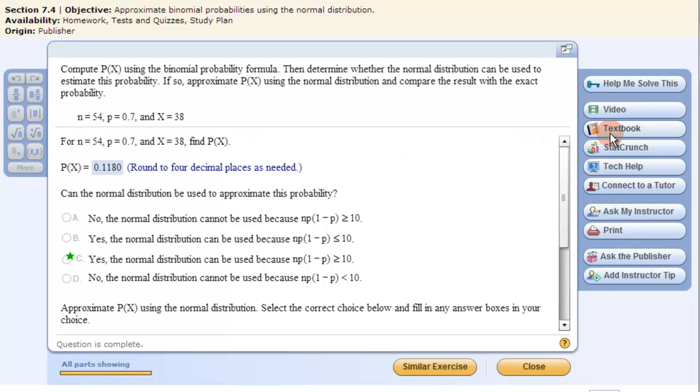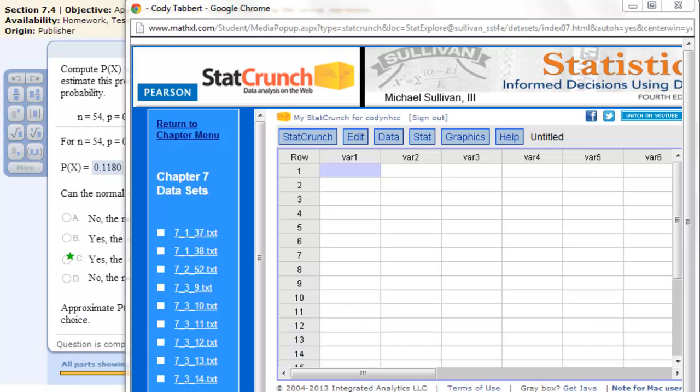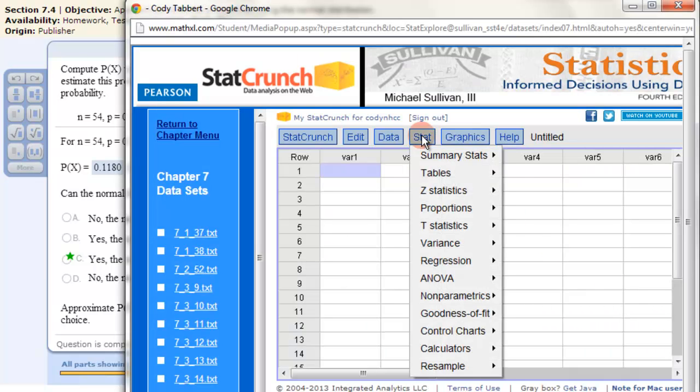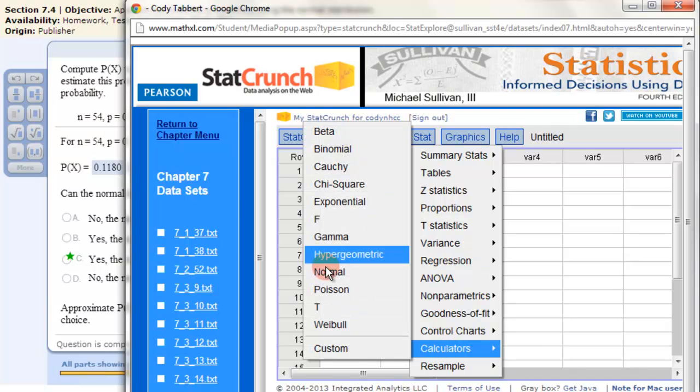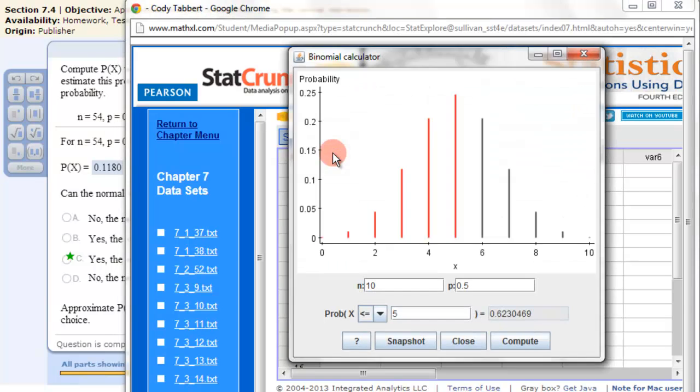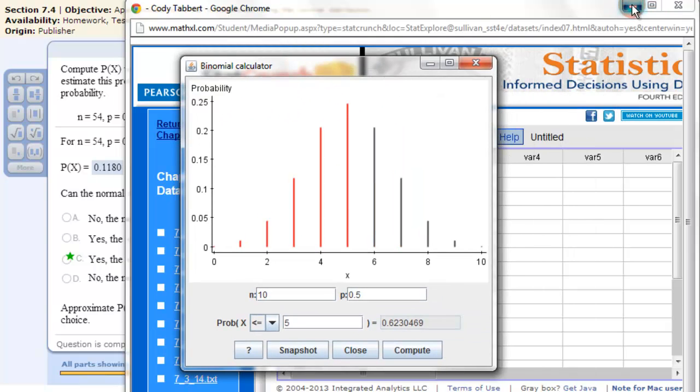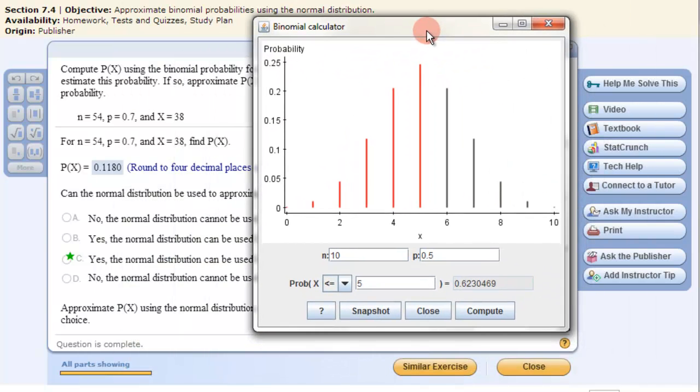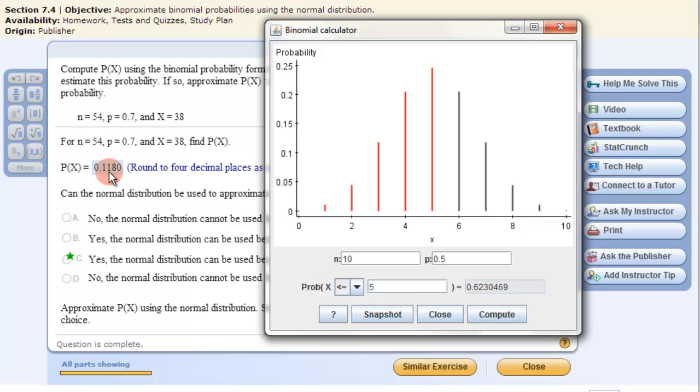So we go into StatCrunch, then we go into the stat calculators and we get the binomial. So here's our binomial calculator. We want to get the probability of X number of successes and the X will be 38, so we fill all this in.